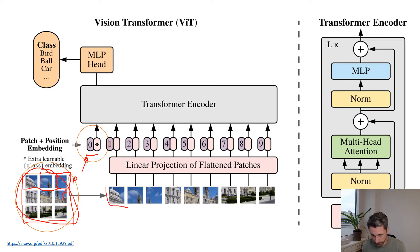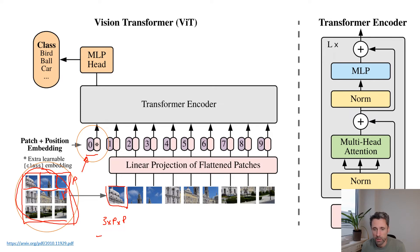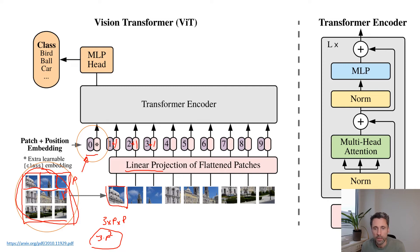Each patch is then flattened so that we have a vector of dimensionality three times P squared. These are pushed into a linear projection — just a matrix multiplied to those vectors — and they will then be embedded and added to so-called positional encodings. These positional encodings are vectors that can also be learned, and they represent the position of these patches in the original image.